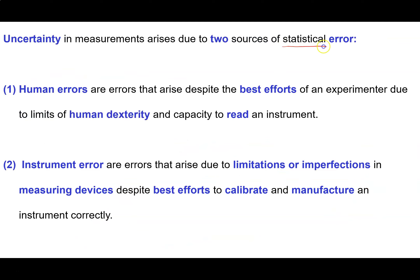There are two sources of what we call statistical error — and these are not mistakes, they are things we can't avoid. Human errors arise because even a well-trained person doing their very best has limits to their dexterity and eyesight. Instrument errors arise because even the best-manufactured and calibrated machine has limits to its precision. Together, these lead to uncertainty in our measurements.